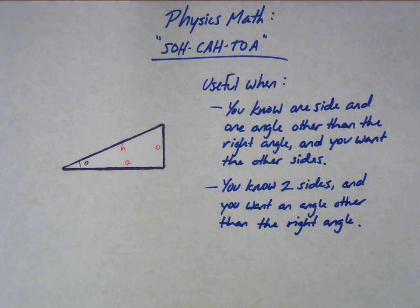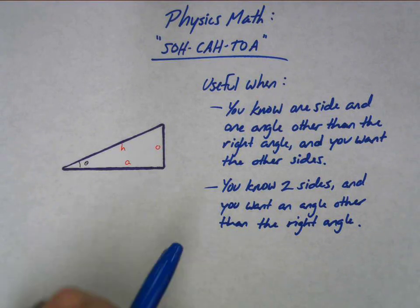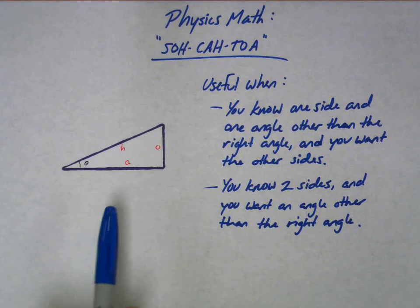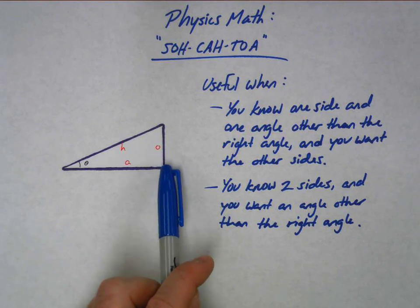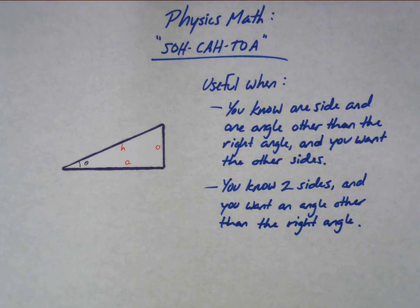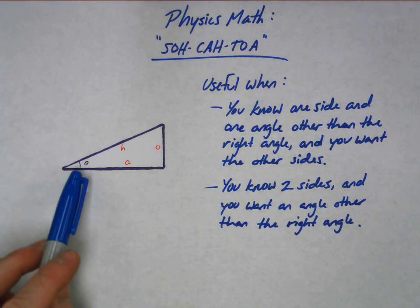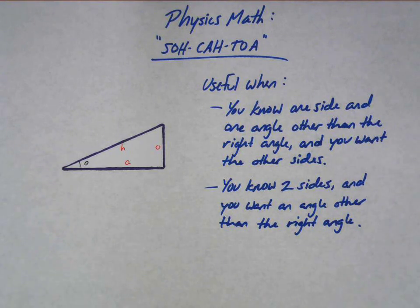So why would you want to use this? Well, in physics, it's going to help us quite a bit. And even if you've seen this stuff before, this is going to be pretty good information for you. If you know one side of the right triangle and one of the angles inside — one of the angles other than the right angle — and you want to know the other sides of the triangle, then the trig functions can be very useful for you.